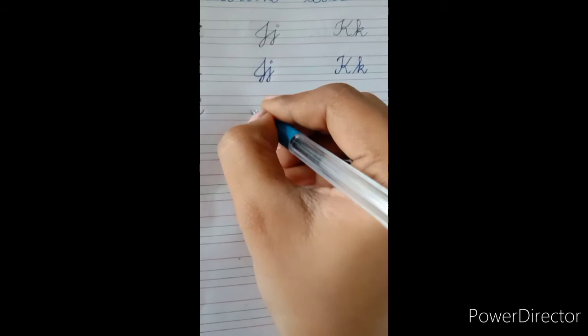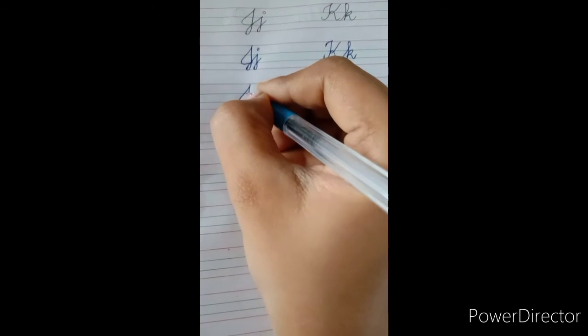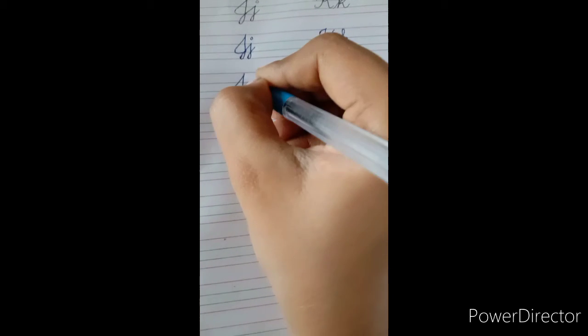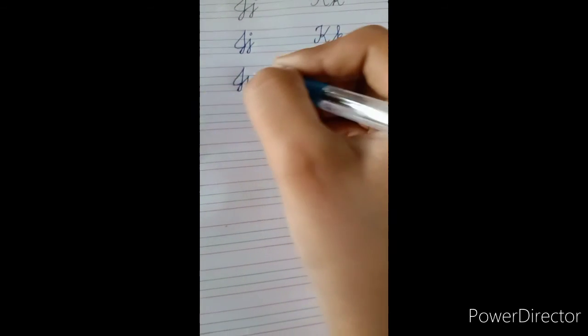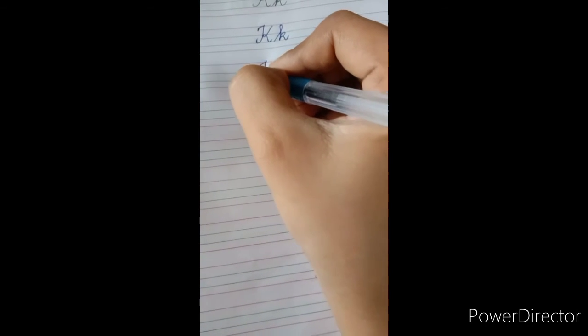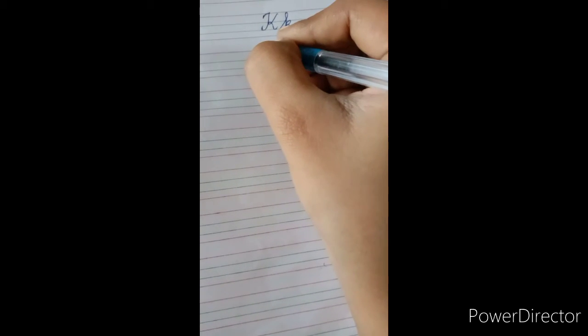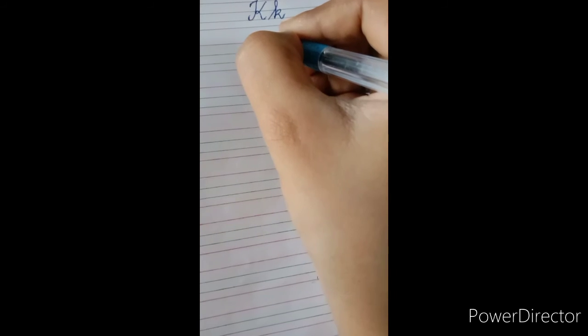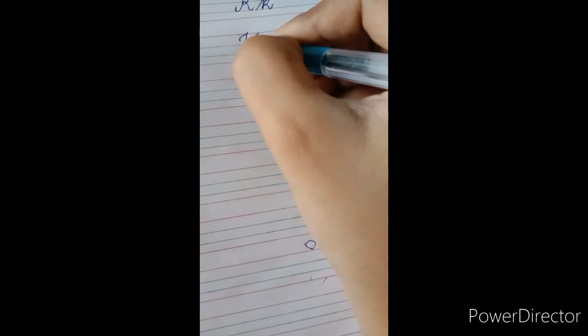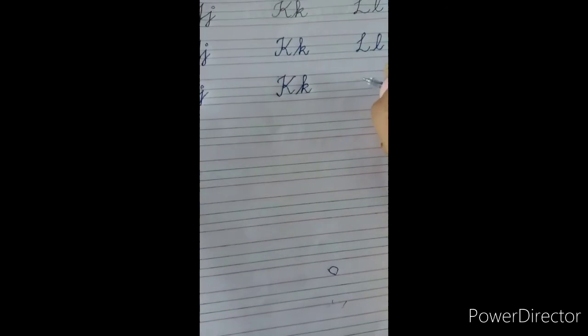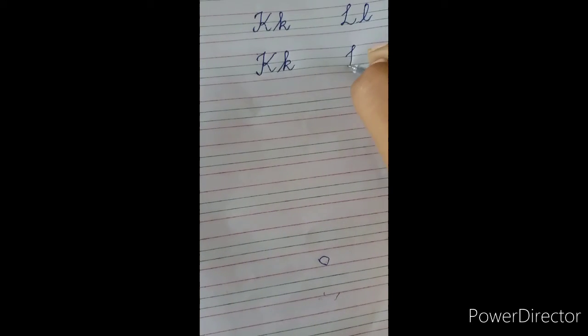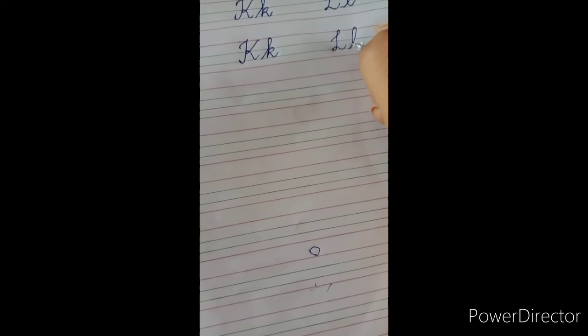And next, J, we are going to be in fourth line. Starting at the third line, we end at the second line. Small j we start with second line. K for kite, we start with first and second line, and small k we start with third line. L we start with second line, start and ending.